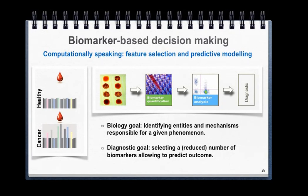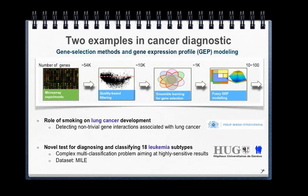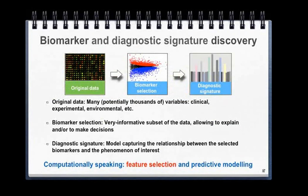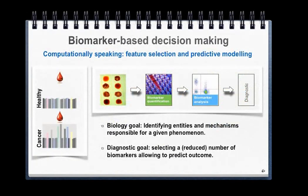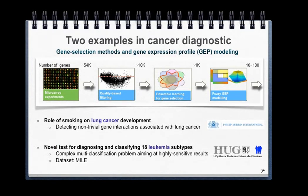We also have constraints like cost and predictive performance. In two of our projects, the goals were more biological — mainly to understand and identify entities or mechanisms responsible for a given phenomenon, such as which genes are most affected by a type of cancer. In more projects, the goal was more diagnostic: selecting biomarkers that could predict the presence or absence of a given condition, and putting that into a test.